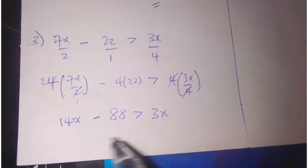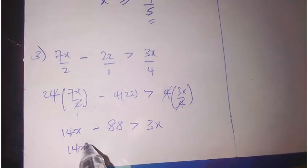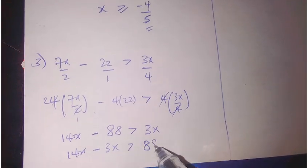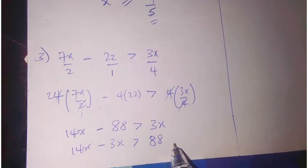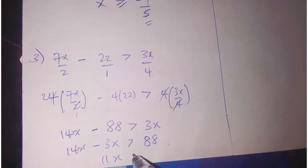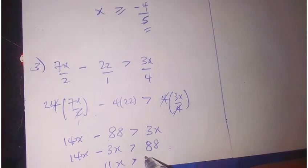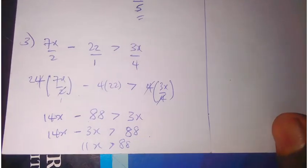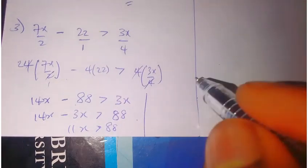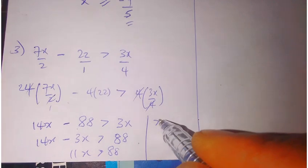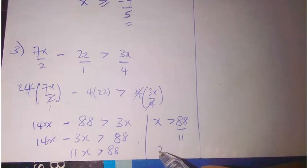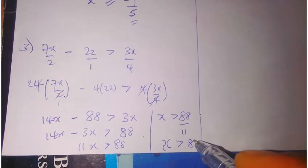Collecting like terms now becomes 14x minus 3x to be greater than plus 88. Subtracting, this becomes 11x to be greater than 88. I'll divide by 11 to get my x. My x now becomes 88 over 11, which means my x is greater than 8.